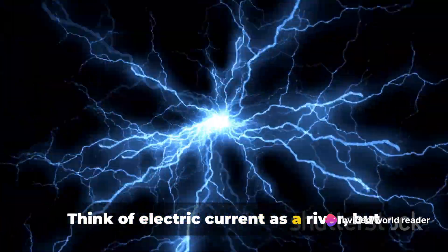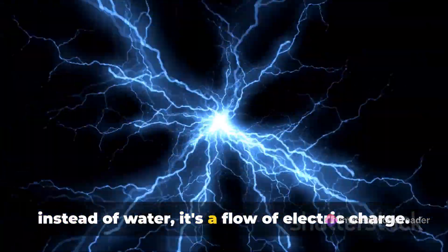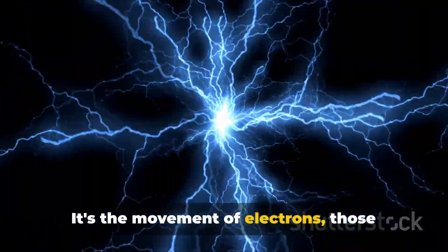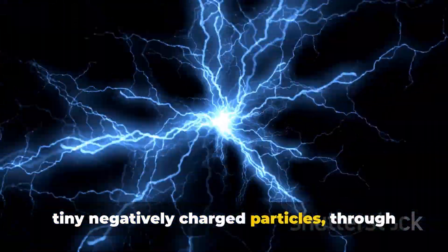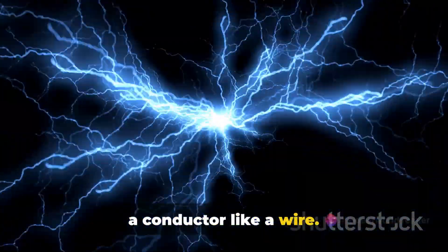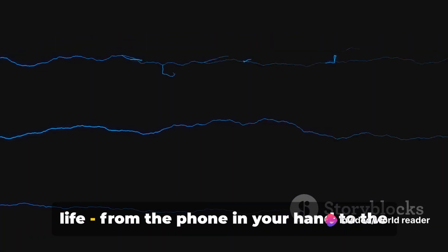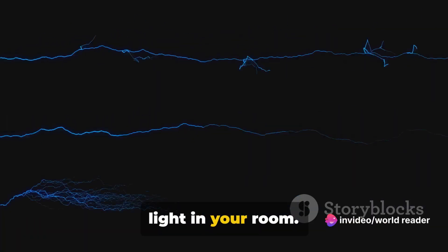Think of electric current as a river, but instead of water, it's a flow of electric charge. It's the movement of electrons, those tiny negatively charged particles through a conductor like a wire. This flow is what brings our devices to life, from the phone in your hand to the light in your room.